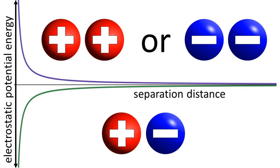The further apart these particles get from each other, the lower their mutual repulsion and the lower the electrostatic potential energy. Now let's look at what happens if I have two oppositely charged particles that I'm holding right next to each other. This represents a very low level of electrostatic potential energy. These particles want to be located next to each other. If I now increase their separation distance, the mutual attractive electrostatic force gets larger, and so does the electrostatic potential energy.